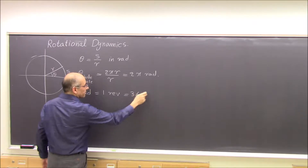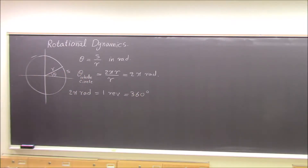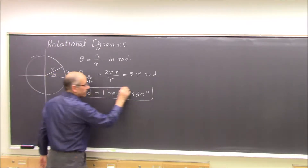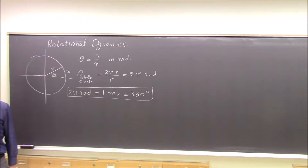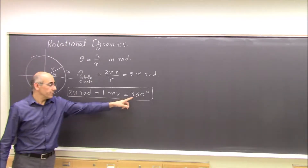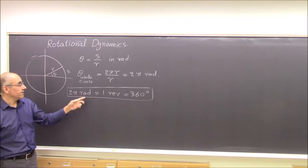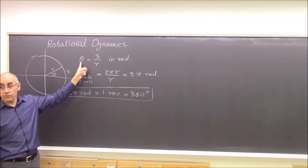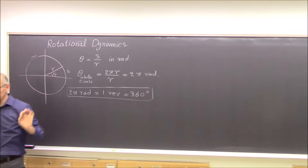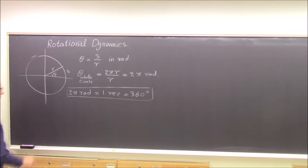Sometimes we talk about revolution, sometimes about radians, and sometimes about degrees. This gives you conversion factors when you want to convert from revolutions to radians or from degrees to radians. The SI unit for theta is radians.